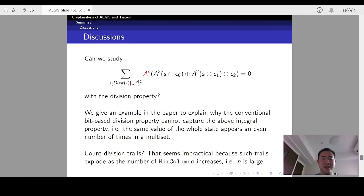It's interesting to see whether the division property can capture such an integral property. We gave an example in the paper to explain why the conventional bit-based division property cannot capture such a property, where the same value of the whole state appears an even number of times in a multiset. A possible solution is to count the number of division trails, which is a recently new idea. However, such trails will explode as the number of miss column increases. This seems to reveal the importance to prove such an integral property, and this also seems to reveal there is still some room for division property for this problem.